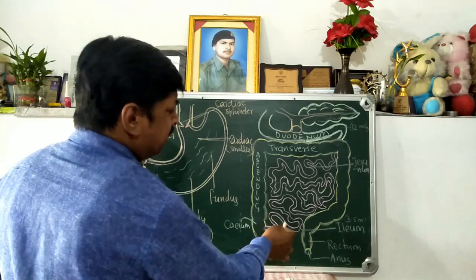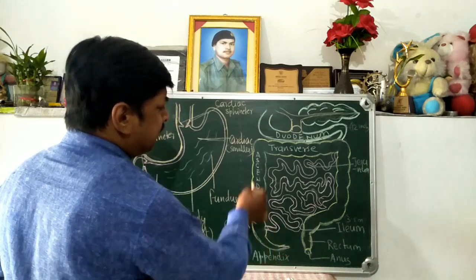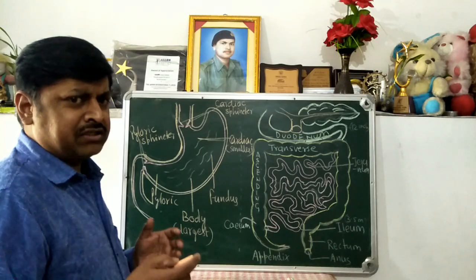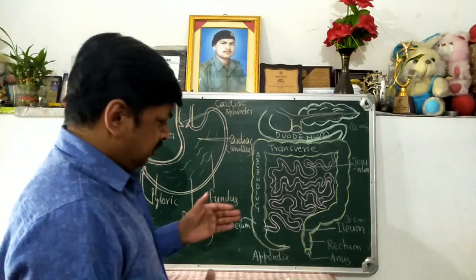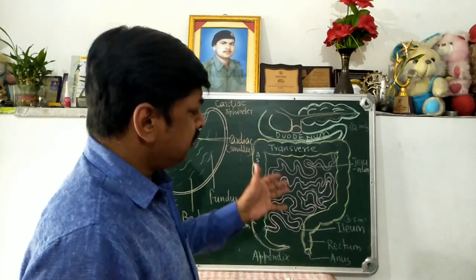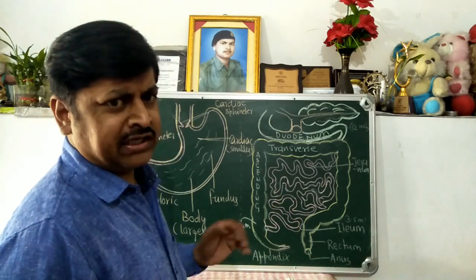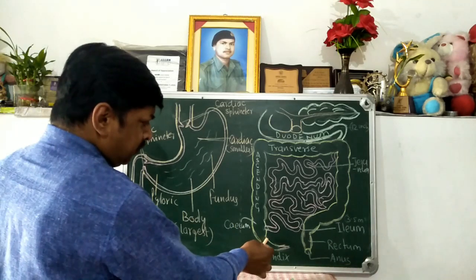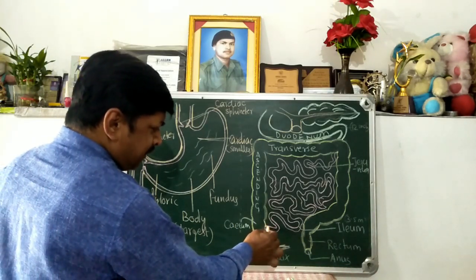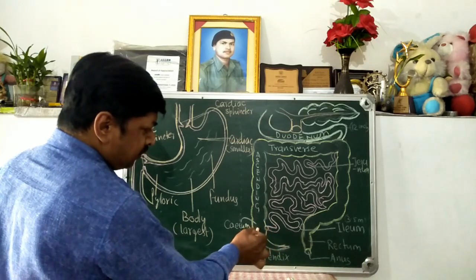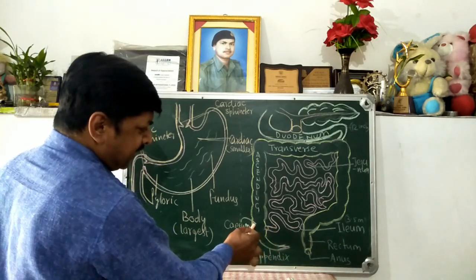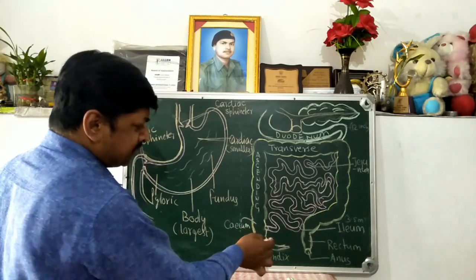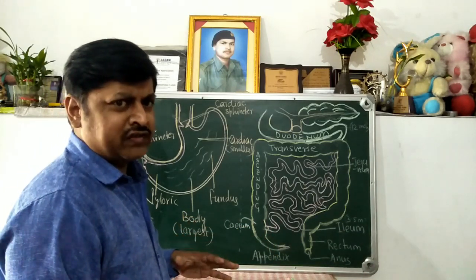The ileum opens into the large intestine. The large intestine is divisible into three parts: the cecum, colon, and rectum. The ileum opens into the first part of the large intestine, called the cecum. In rabbits the cecum is broader because symbiotic bacteria help with cellulose digestion.